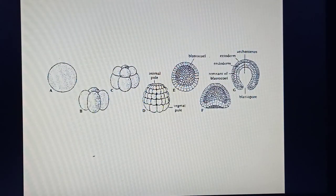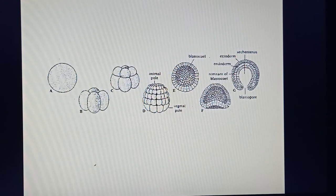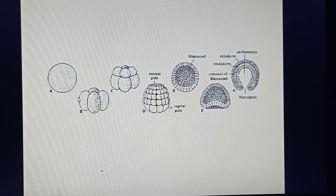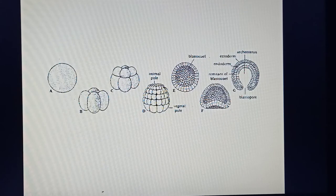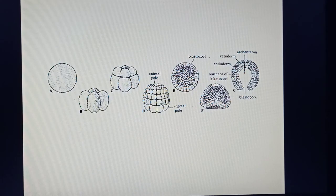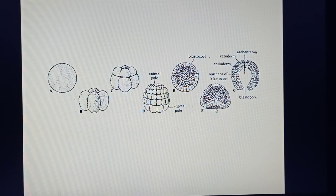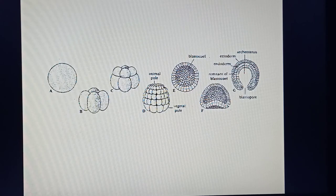Observing this figure: if this is a zygote, it divides longitudinally — that is the cleavage of the zygote. Then the cells divide transversely, forming a ball-like 16-cell structure called the morula. Then approximately 100 cells form the blastula. Inside the blastula there is a cavity called the blastocoel, and its cells are called the blastoderm. In a later stage, the cells of the blastula move inward through invagination, forming a new stage called the gastrula.